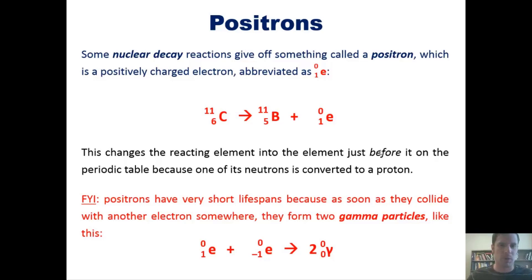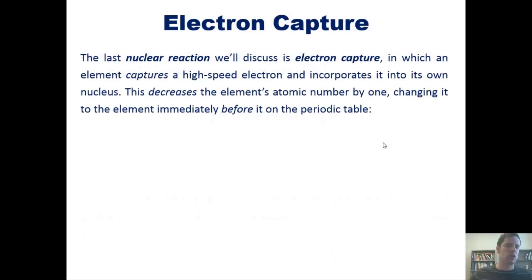The last nuclear reaction we'll discuss is electron capture, in which an element captures a high-speed electron and incorporates it into its nucleus. This decreases the element's atomic number by one, changing it to the element immediately before it on the periodic table. Here's an example: rubidium-81 captures a very high-speed electron. Mathematically, 37 plus negative one equals 36, so we now have krypton-81.